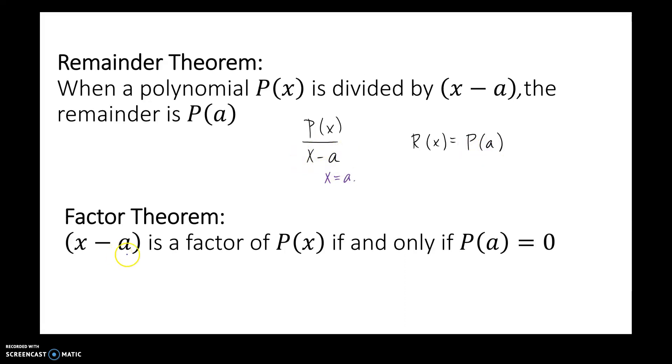Factor theorem. X minus a is a factor of a given polynomial if and only if p of a equals 0. So what does that mean? If I get a remainder of 0, then whatever number I plugged in, that expression would be a factor. And if and only if, I'm going to draw a double-sided arrow here. Because if and only if statements mean just, they work either way. Meaning, if I have a remainder of 0, I then know that I have a factor of the polynomial. Or, if I know I have a factor of a polynomial, then I know the remainder has to be 0.